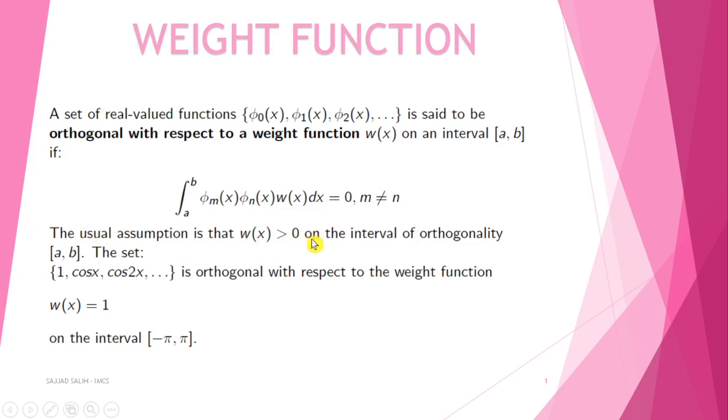The usual assumption is that w(x) is greater than 0 on the interval of orthogonality [a, b]. The set {1, cos x, cos 2x, ...} is orthogonal with respect to the weight function w(x) = 1 on the interval [-π, π].